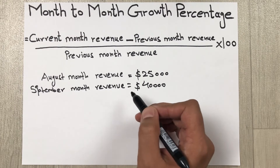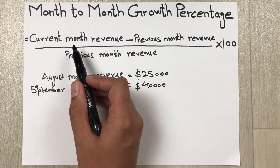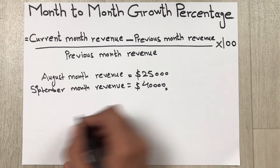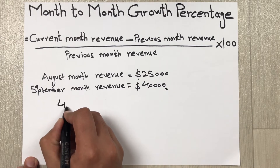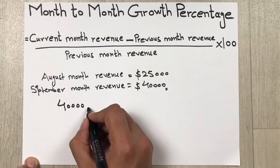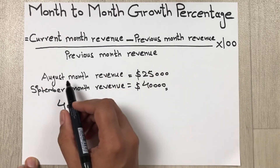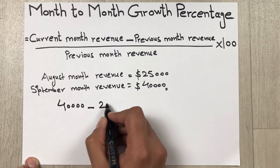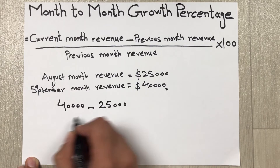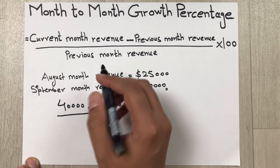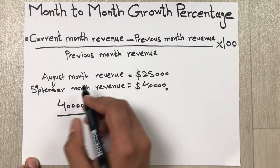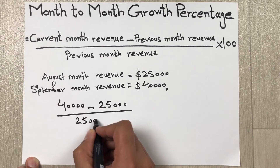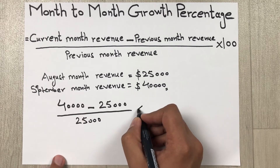Now we will put these values into the formula. Current month revenue is September, so we put 40,000. Then minus the previous month revenue — August — which is 25,000. Divided by the previous month revenue, which is also 25,000. Then multiplied by 100.